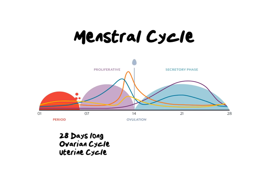So let's look at a few basics surrounding the menstrual cycle. It's roughly 28 days long and it's broken into two cycles: the ovarian cycle, which takes place in the ovary, and the uterine cycle, which takes place in the uterus. It's really important to know that whatever happens in the ovary affects the uterus.